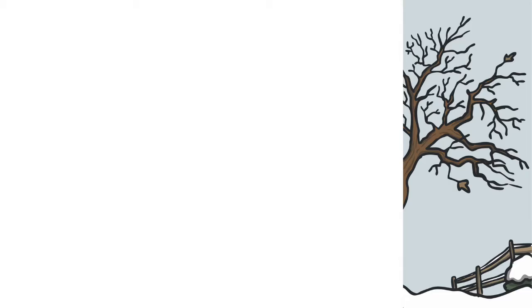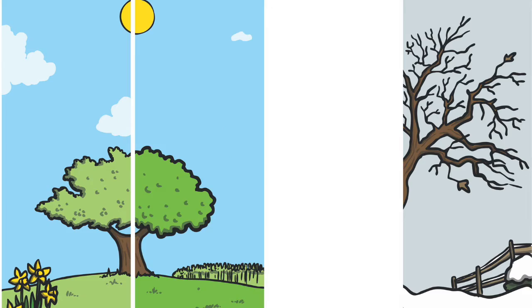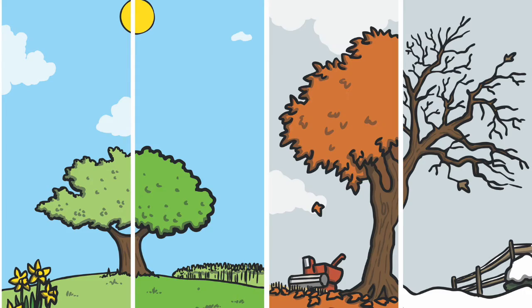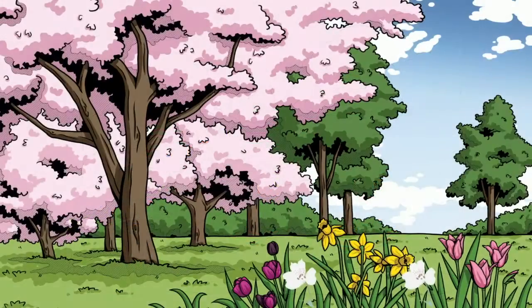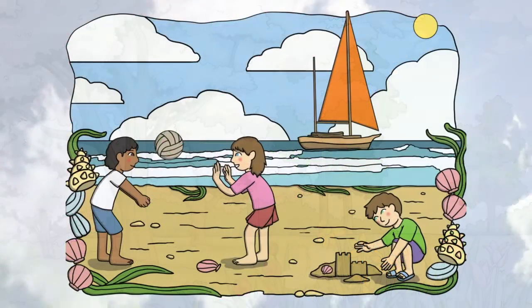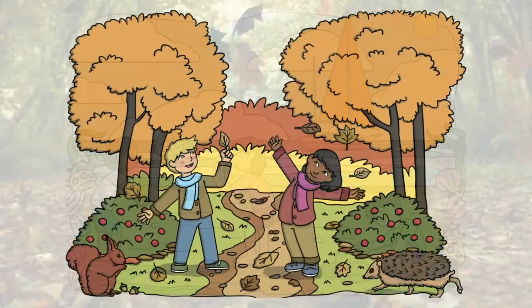In most countries, there are four seasons: winter, spring, summer, and autumn. However, depending on where you live in the world, you may experience different types of weather during different seasons.